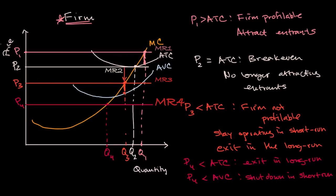At P sub three, in the long run, you'd want to exit because you're not profitable if prices stay at P sub three. Your price is below your average total cost at the rational quantity to produce. So in the long run, you would exit.